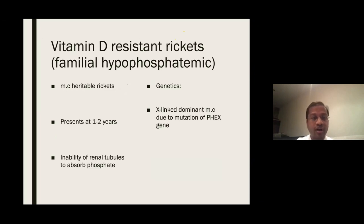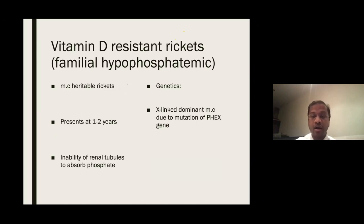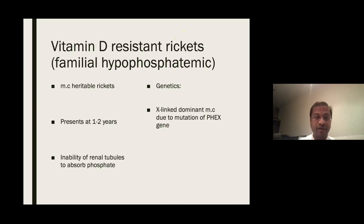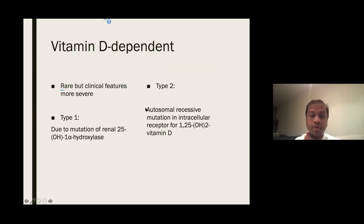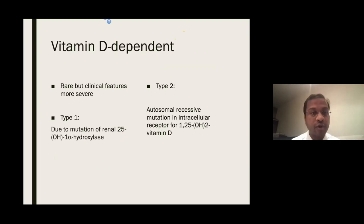Vitamin D-resistant rickets is relevant for the FRCS Part 1. It is uncommon but the most common heritable form of rickets, presenting at one to two years of age. Due to an X-linked dominant mutation of the PHEX gene, there is inability of renal tubules to absorb phosphate, resulting in rickets. There is also vitamin D-dependent rickets — a rarer variant with more severe clinical features. Type 1 involves a mutation of renal 25-1-hydroxylase, the last step before formation of active vitamin D. Type 2 involves a mutation of the intracellular receptor.